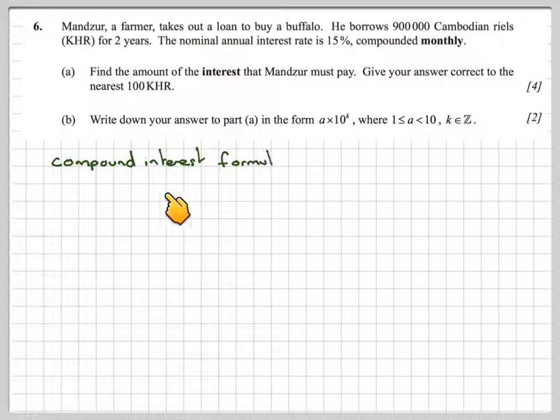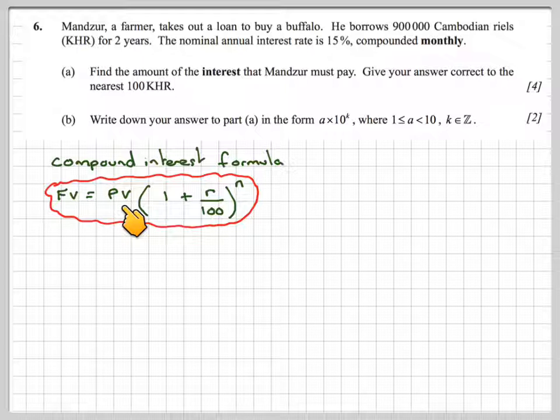The compound interest formula is FV = PV(1 + r/100)^n. That's if the compound rate is yearly. However, we've got a compound rate which is monthly.